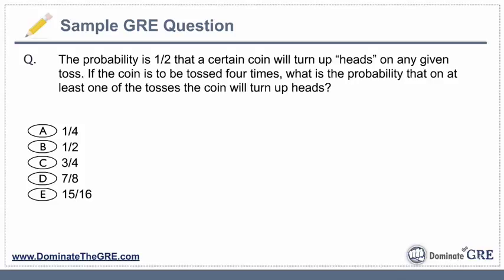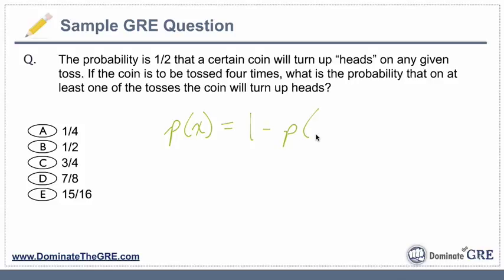All right, so how'd you do? Let's assume you did not know immediately how to do it the traditional way. This is an application of the complement rule of probability, something you certainly should know how to do on the GRE — namely that the probability of something, like the probability of X, equals 1 minus the probability of not X.